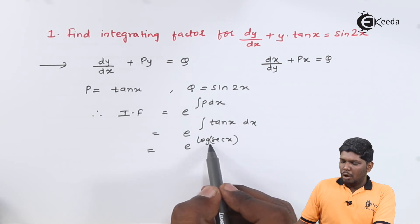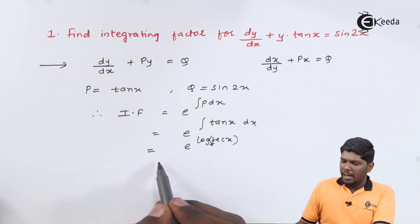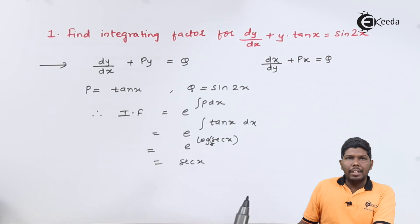As you can see, the log will have base e only. That will cancel each other, and we have sec(x) as the final answer.